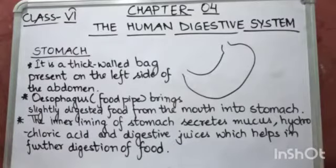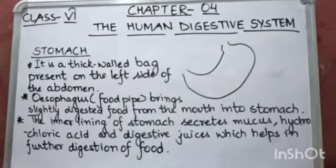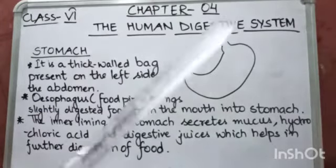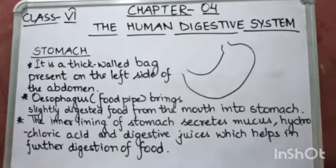Now students, we will continue with the same chapter — Chapter 4, The Human Digestive System. Earlier I told you about the alimentary canal and its various parts, and I also told you about how digestion occurs in the mouth, that is the buccal cavity, and the esophagus. Today you're going to learn about how digestion occurs in the stomach and other parts of the alimentary canal.